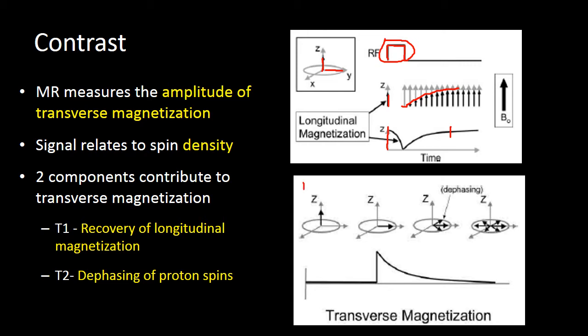When we think about T2, this chart explains the T2 properties that contribute to signal. Initially, all our protons are aligned in that Z-axis. We apply our RF pulse, which causes all of the protons to not only go into the transverse plane, but to also be perfectly aligned with one another. But because of local magnetic field inhomogeneities and differences in the molecular bonds that the protons are in, they will start spinning at slightly different speeds. As they begin spinning at slightly different speeds, even though they're still all in the transverse plane, they start to cancel each other out.